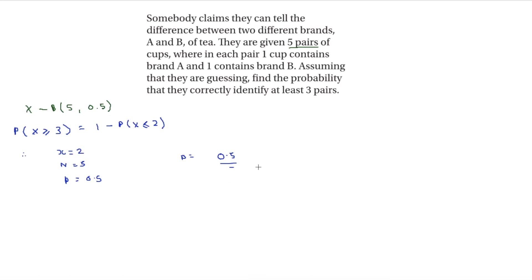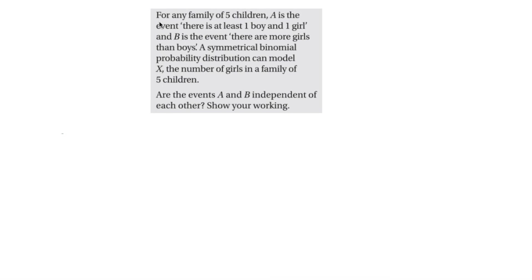Since 1 minus 0.5 is simply 0.5, the probability is 0.5. The final question says that for a family of five children, A is the event there is at least one boy and one girl, and B is the event that there are more girls than boys. X is the number of girls in a family of five. Are events A and B independent?